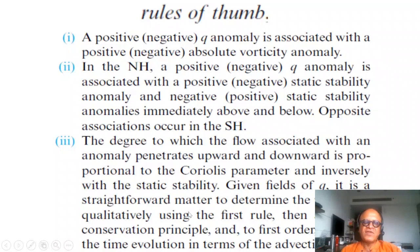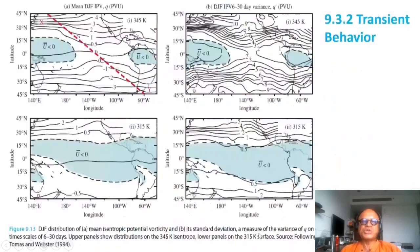Given the fields of q, it's a straightforward matter to determine the wind field qualitatively using the first rule. Then apply the conservation principle and to first order interpret the time evolution in terms of the advection of q.